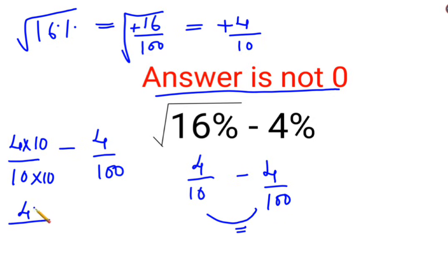So now this became 40 upon 100 minus 4 upon 100. Now since the denominators are now equal, we can say it is 40 minus 4 upon 100.